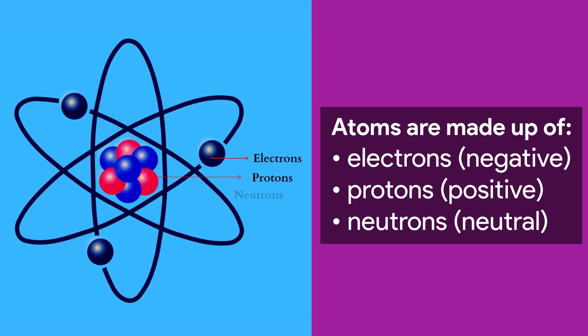Atoms are made up of subatomic particles. There are different kinds of subatomic particles, but for now we're interested in just three: electrons, protons, and neutrons. Electrons have a negative charge. Protons have a positive charge. And neutrons have no charge at all.